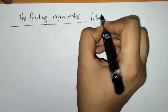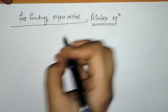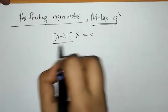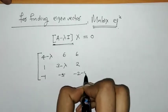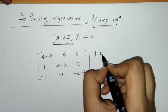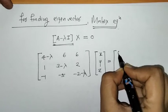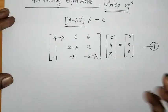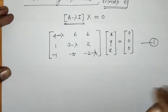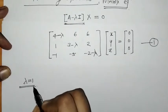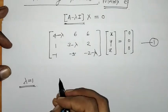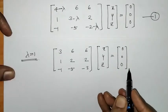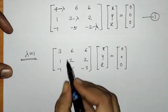Now for these eigenvalues we have to find eigenvectors. For finding an eigenvector, we consider the matrix equation (A minus λI) times x equals 0, where x is the vector with unknowns x, y, z and 0 is the null column vector. We will find the eigenvector for each respective eigenvalue. First, we find the eigenvector for λ equals 1, so we put λ = 1 in this matrix equation.